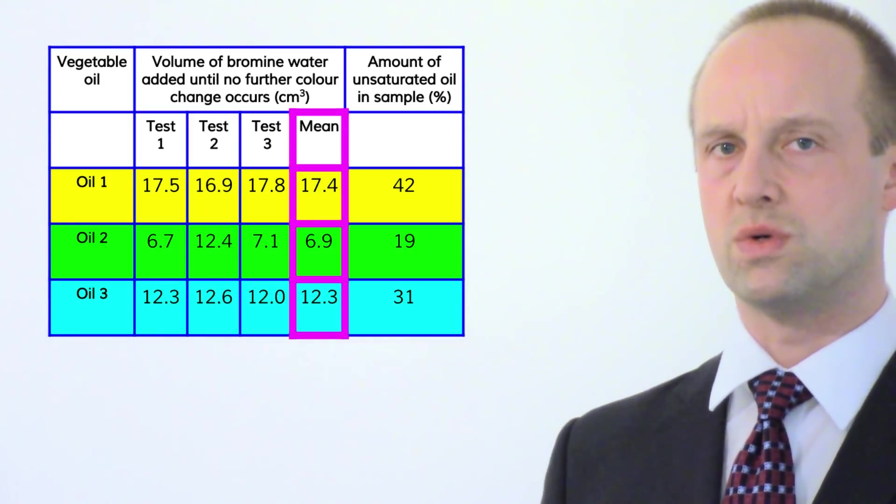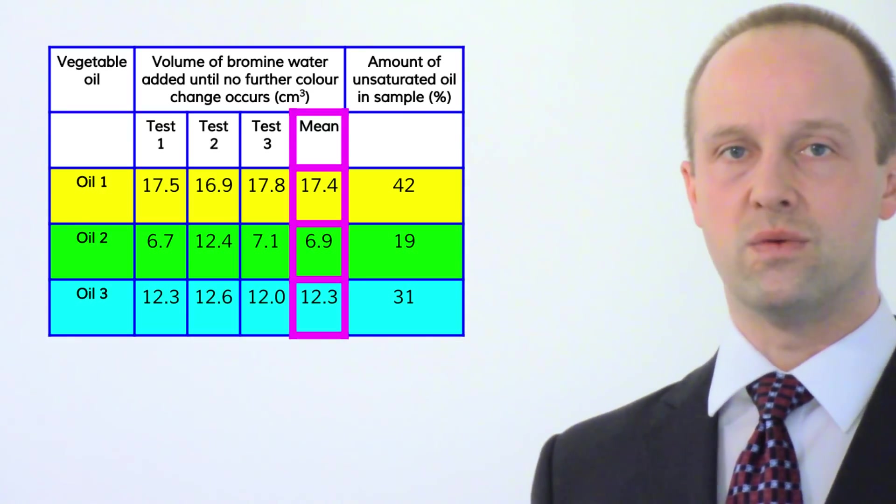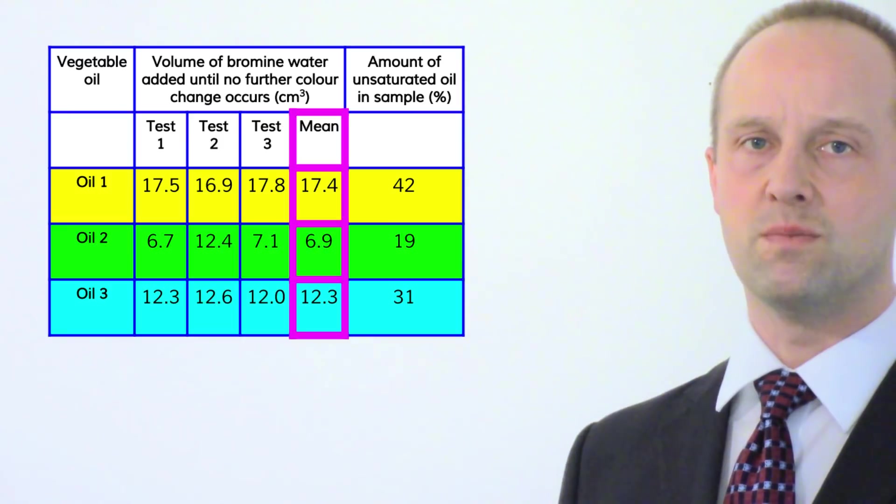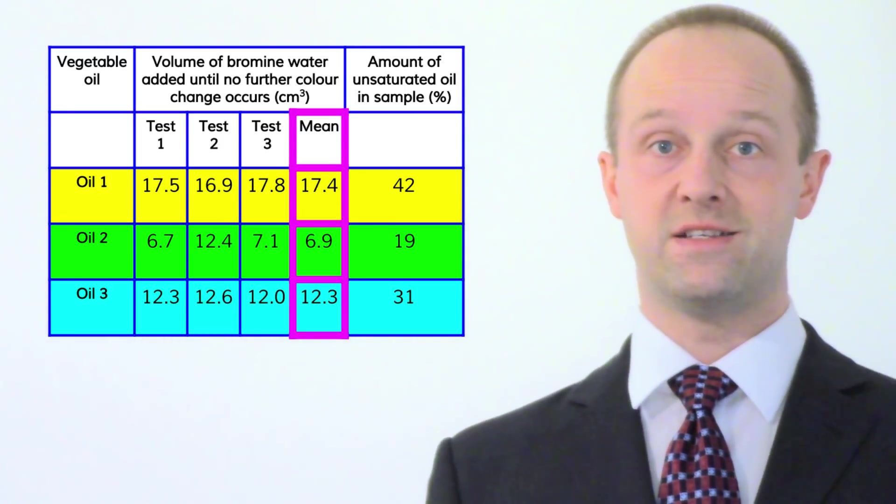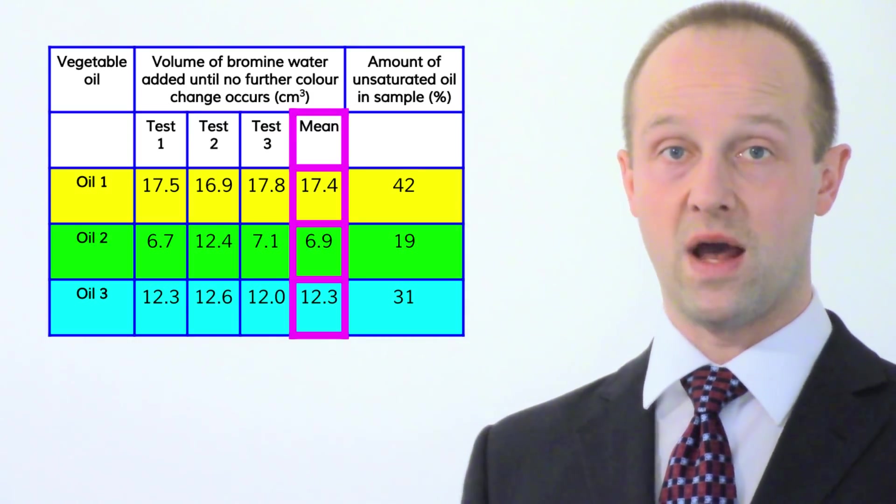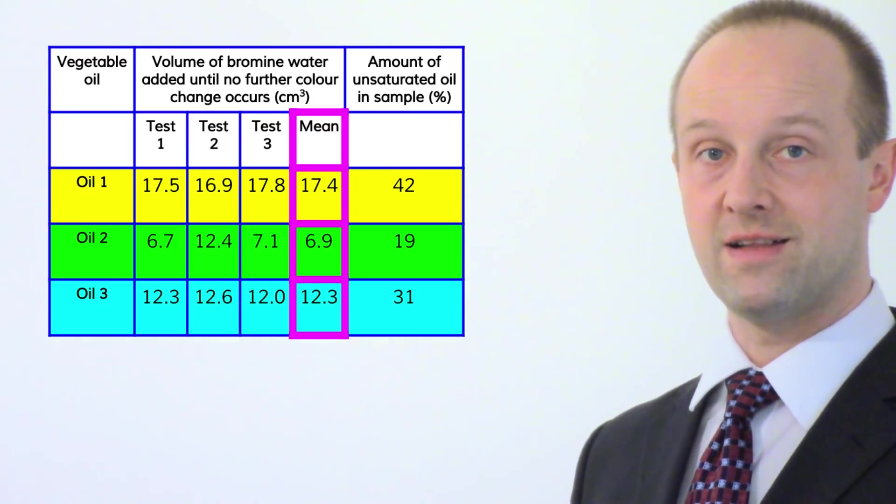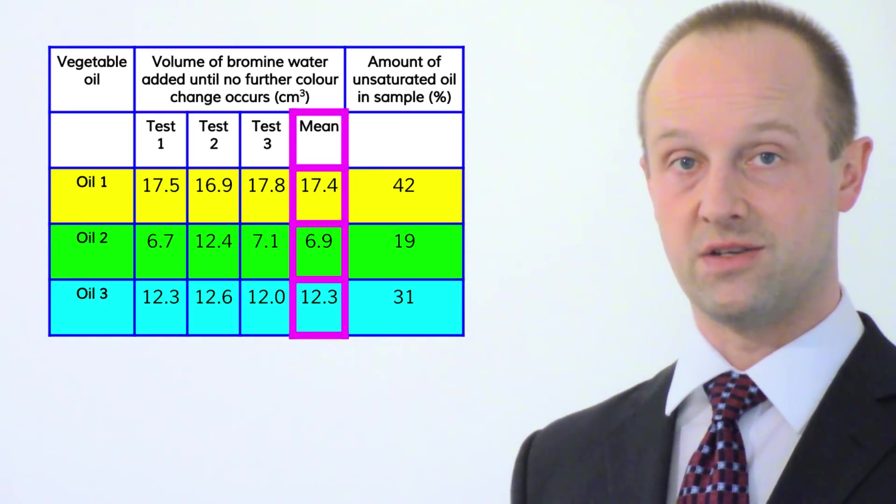So let's highlight where those means are just to separate them out and make it absolutely clear that they are separate to those raw results. What we also need to be aware of is that these means in some way relate to this idea of how much unsaturated oil there is in a sample. You don't need to worry too much about what that means at this point. Just be aware that there is some sort of correlation between our highlighted column of means here and these percentages of unsaturated oil.